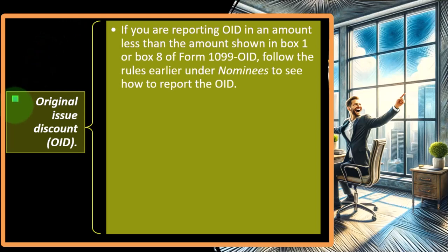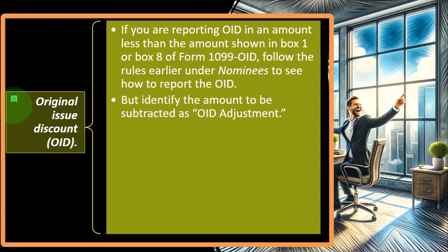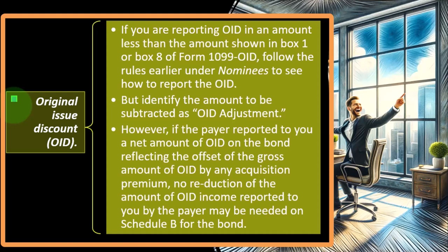Original issue discount, OID. If you are reporting OID in an amount less than the amount shown in box one or box eight of Form 1099-OID, follow the rules under nominees to see how to report the OID, but identify the amount to be subtracted as OID adjustment. This is a similar concept and somewhat of an unusual situation as well.